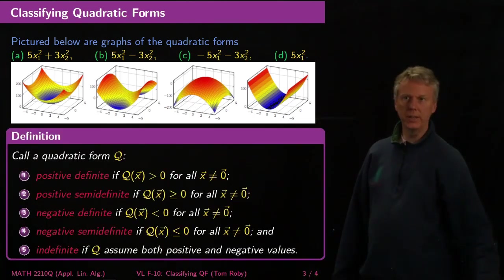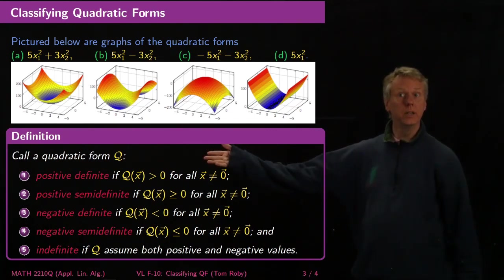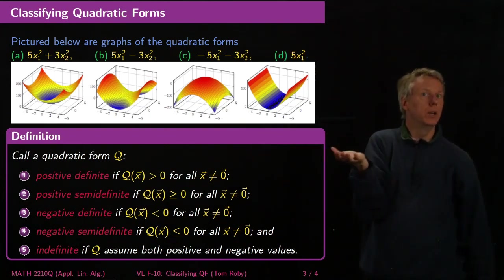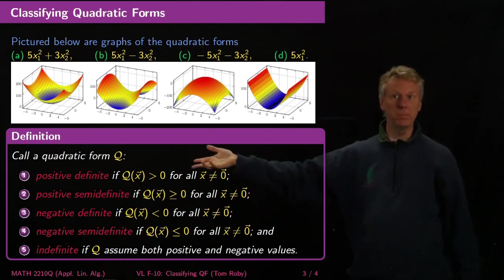Here's the definition. We'll call a quadratic form positive definite if whenever you plug in something non-zero, you always get something positive. When you plug in zero to a quadratic form, you always get zero. The question is what happens when you plug in something non-zero.